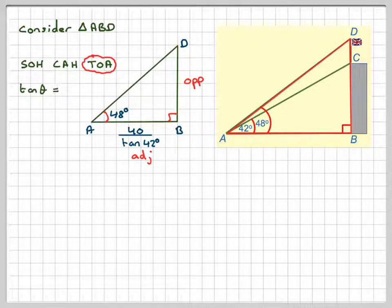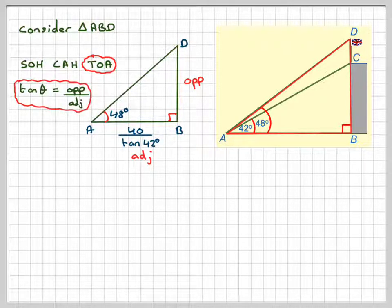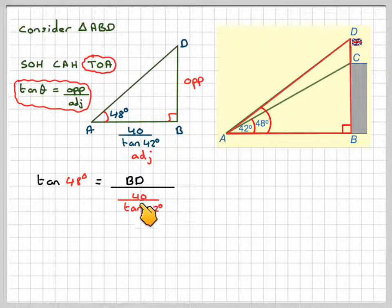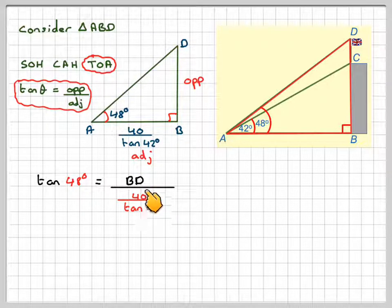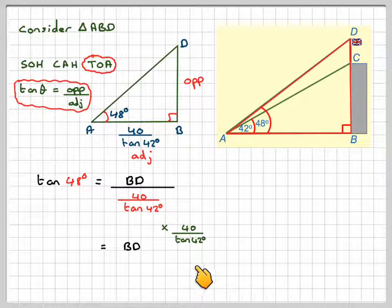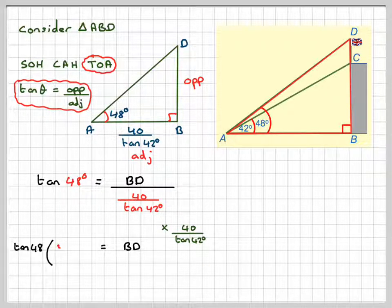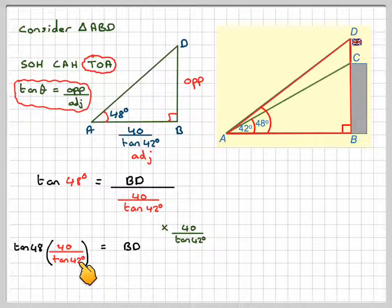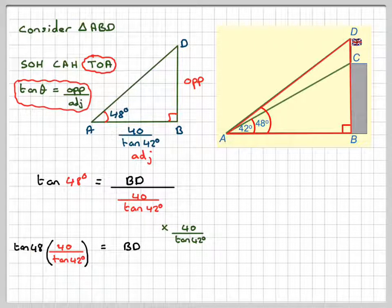We're going to use tan. Write it out. Then we're going to say that tan of 48 is BD, what we want to find, divided by 40 over tan 42. The opposite of dividing is to multiply by 40 over tan 42. So on this side, we're going to have tan 48 times 40 divided by tan 42, which we can do on our calculator. Make sure your calculator is in degree mode.